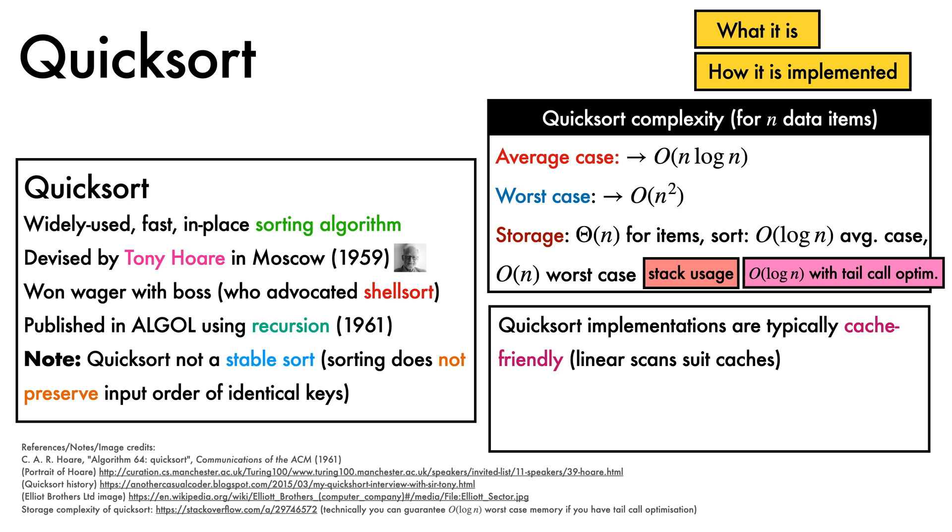In practice, implementations of Quicksort, which makes heavy use of linear scans, tend to be quite cache friendly, so it is often faster than other algorithms with similar average case complexity like Heapsort.